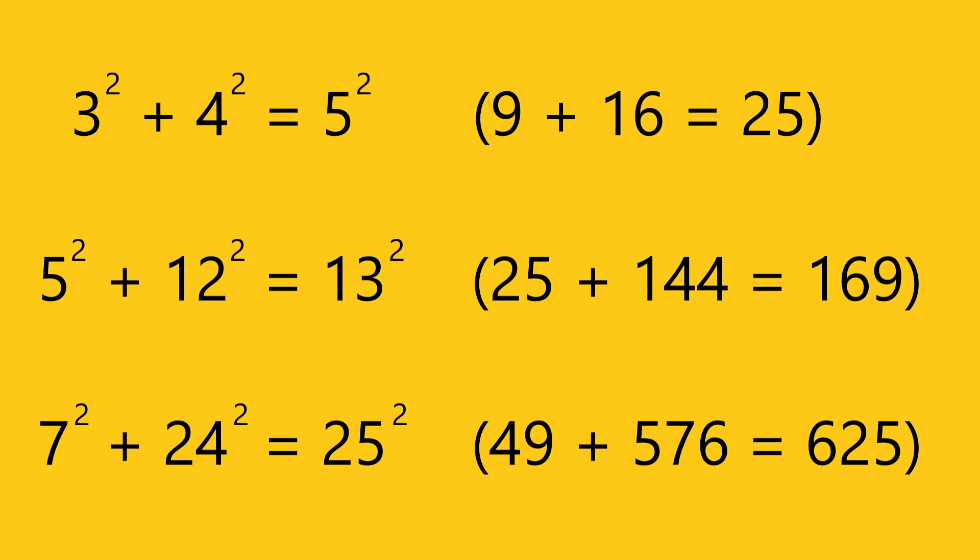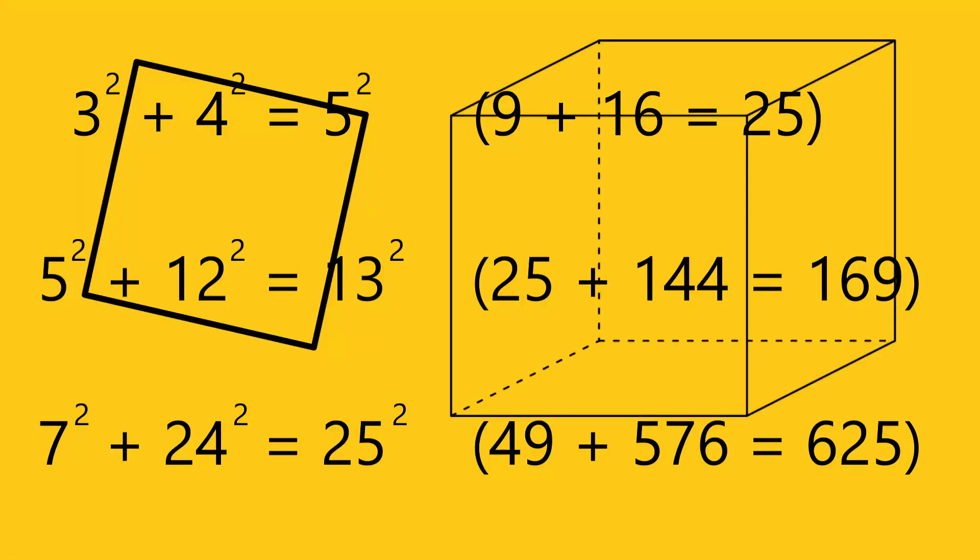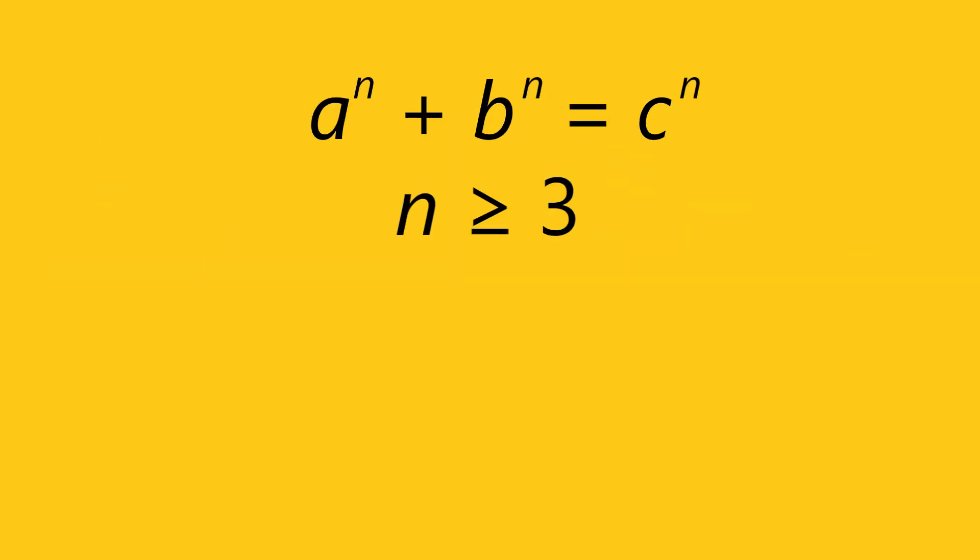What happens if we don't use squares, but use cubes or fourth powers? In other words, what happens if we consider the equation a to the n plus b to the n equals c to the n, where n is a natural number greater than or equal to 3?